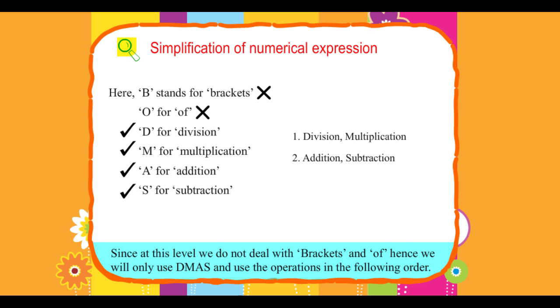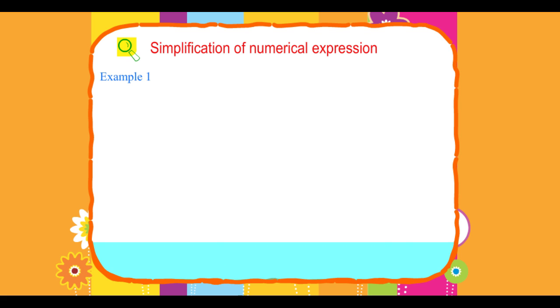Example 1: If we want to find the value of 5×2-9, here multiplication is performed before subtraction. 5×2-9. Multiplying 5 and 2: 10-9. Now we perform subtraction: 10-9 equals 1. Therefore, 5×2-9 equals 1.